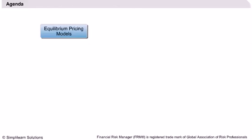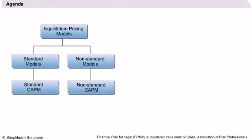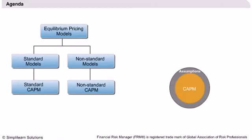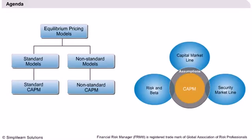We will also plot the capital market line based on these assumptions. In the next lecture, we will derive a model under more practical scenarios. We will begin by explaining the assumptions underlying the standard model and then study risk and its measures using beta. Finally, we will learn about the security market line and how the price of an asset changes with respect to the market.